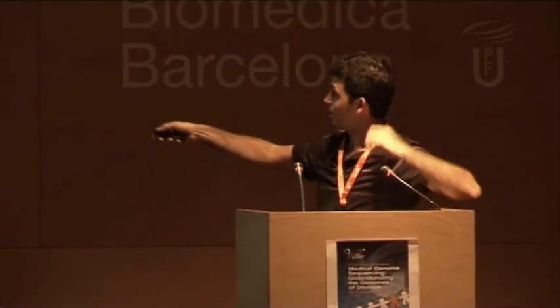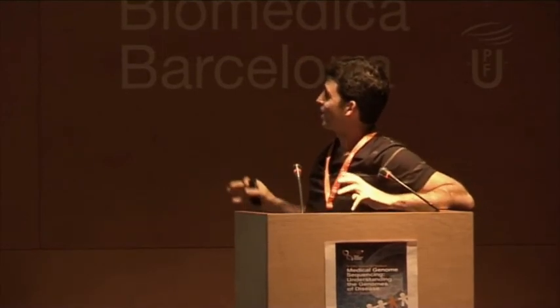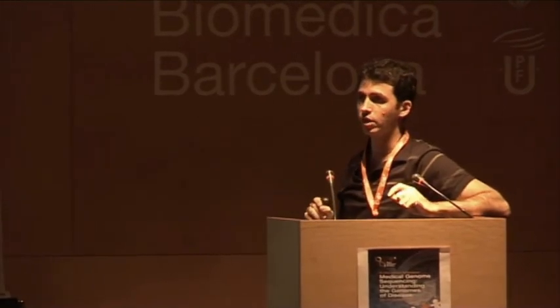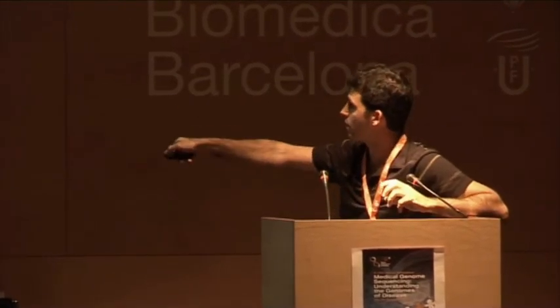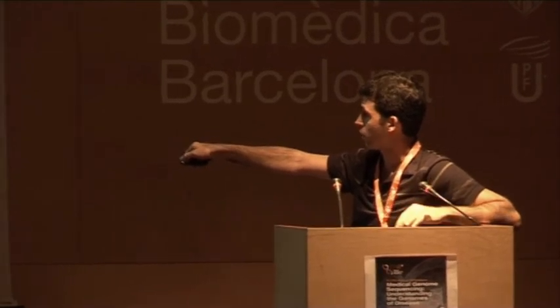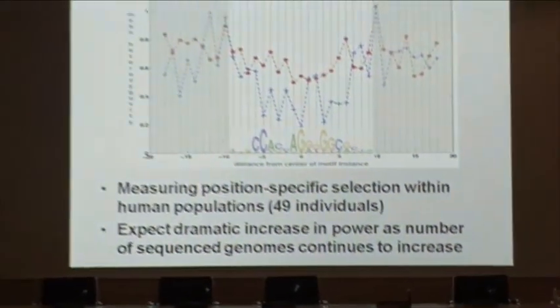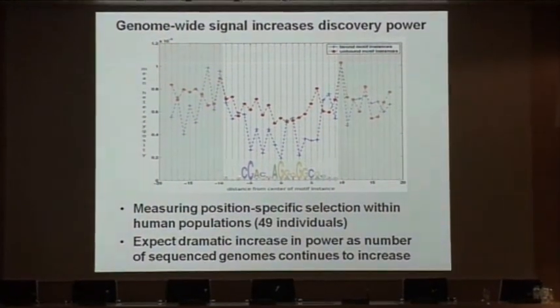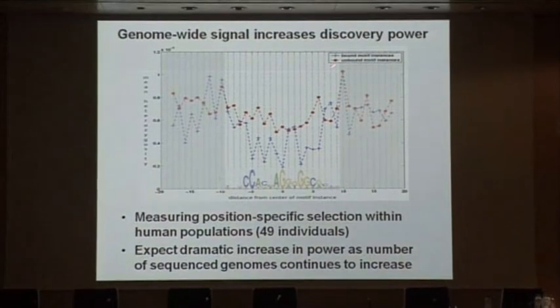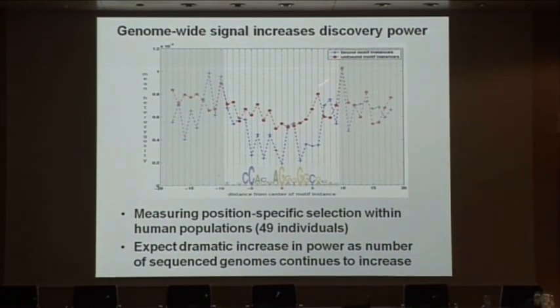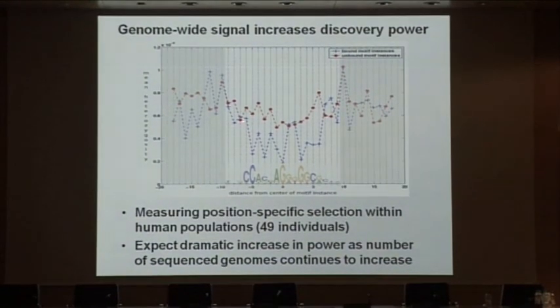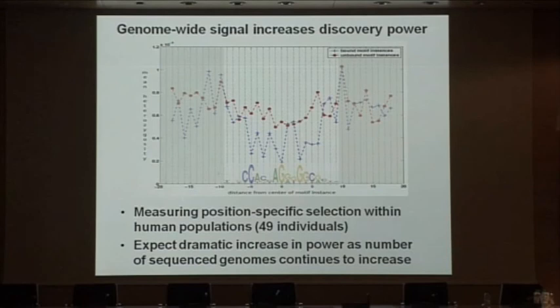This is starting to be really, really interesting. We can now measure selective pressure solely within the human population. In fact, from just 49 individuals in an initial stage of the 1,000 Genomes Project, we can start measuring the position-specific selection across all instances of the CTCF motif in the genome, and measure — for bound versus unbound motif instances — the observed reduction in heterozygosity associated with every position of the CTCF motif.